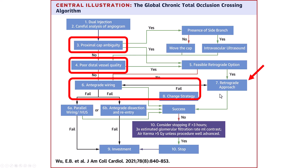This is very similar to the recommendation for the retrograde approach in the global CTO crossing algorithm. It is done for proximal cap ambiguity — one of the three options for crossing, along with move the cap and intravascular ultrasound. It is also potentially recommended for vessels with poor quality in the distal vessel, and then if antegrade wiring attempts fail.